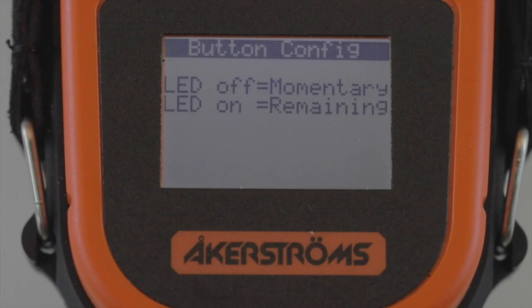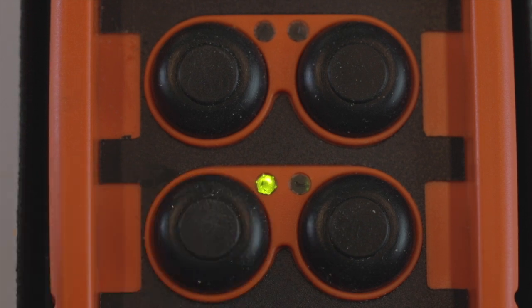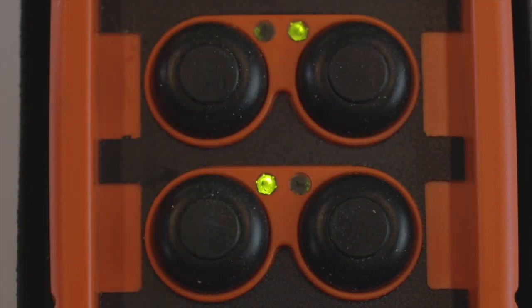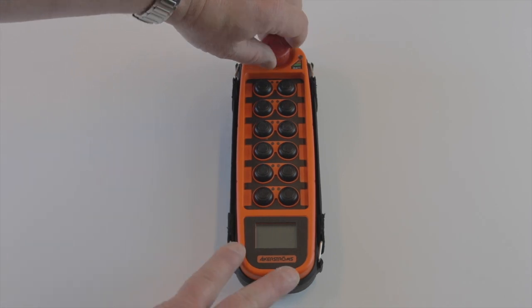The display shows button config. Now press the buttons you want to assign with remaining function. The button's LED will light up. Restart the transmitter to apply the change.